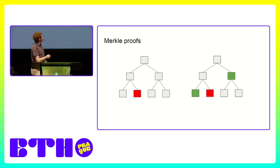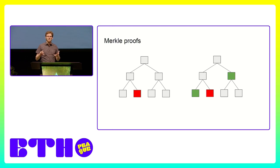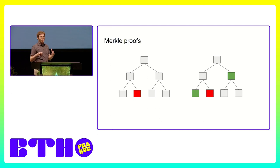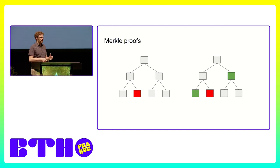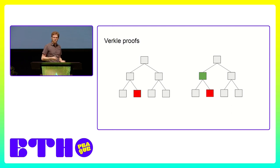In the structure used by Ethereum, you don't have two children per node but sixteen, so for each level you need to pass fifteen siblings. That makes for a lot of data. We want to make Ethereum more stateless so people don't need to keep that data — they can just grab it from the block itself. But if we put all this information in blocks, the blocks would be way too big.